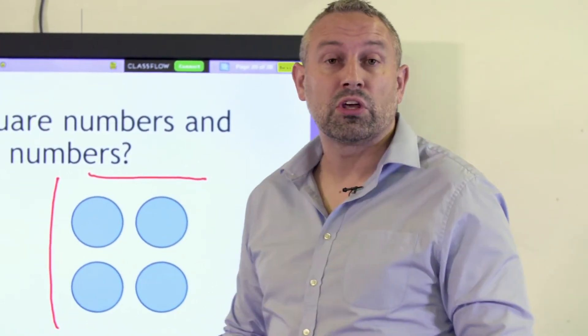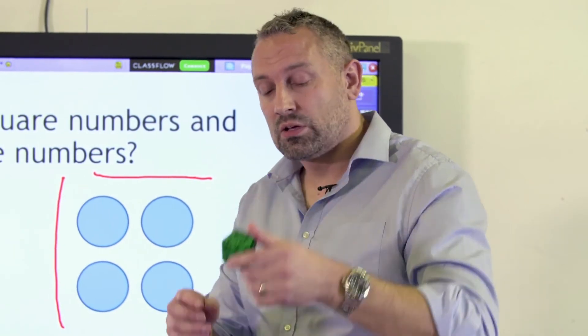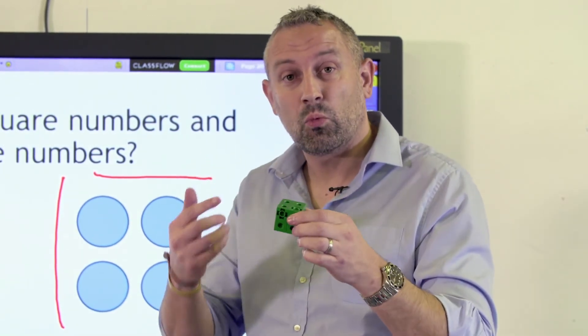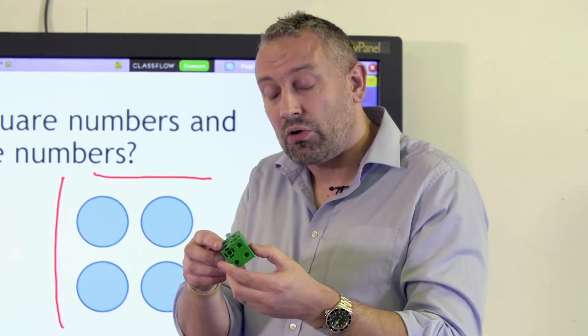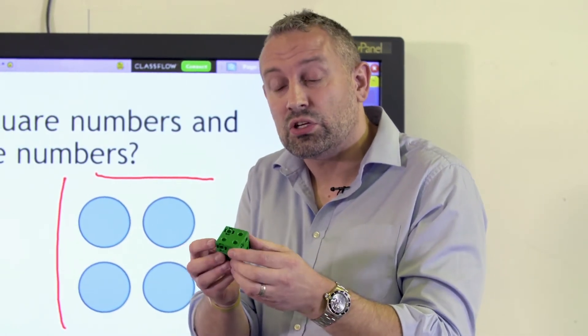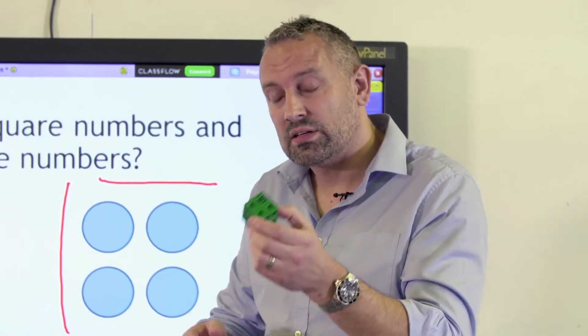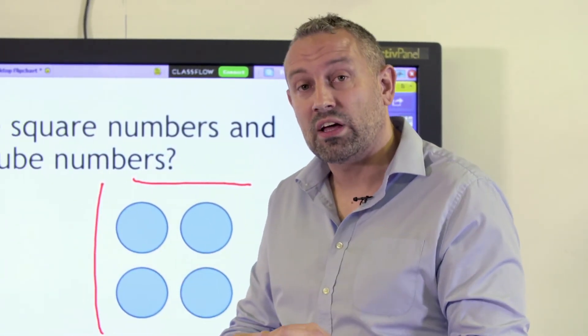To move on from that, we would look at cube numbers. Here in our cube we have 2 by 2 by 2, which is 8. The children can explore and take it to pieces, and they can see that 2 times 2 times 2, or 2 cubed, is 8. That's really valuable for them to have that chance.